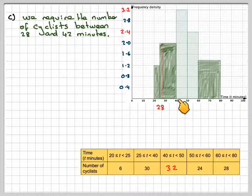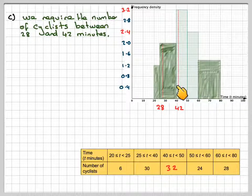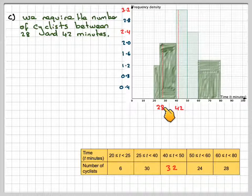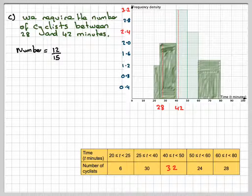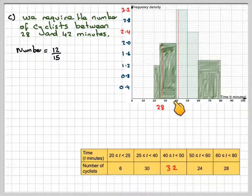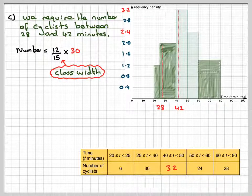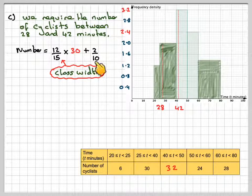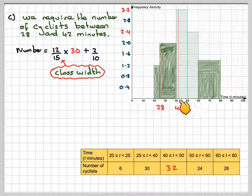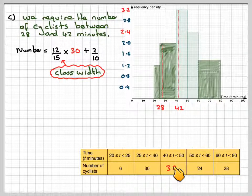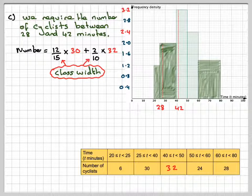And then 42 will be one little square into here. So it does go across two different bars. We have to deal with it separately. So 40 minus 28 is going to be 12 out of the total class width of that particular column, which is 15. And then we know that this column here represents 30 cyclists. And then we need to add to that 2 tenths, because that's 2, this class width is 10, so that's 2 out of 10 times 32. And then if we work that out on our calculator, we're going to get 30.4, but we can't really have that.